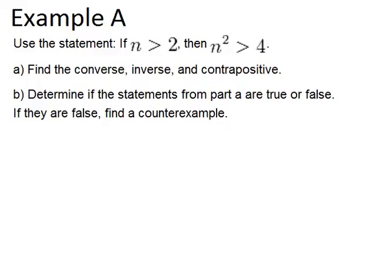In example A, it says use the statement: if n is greater than 2, then n squared is greater than 4. We have to do two things: find the converse, inverse, and contrapositive, and also determine if those statements are true or false. If they're false, find a counterexample to prove that it is false.